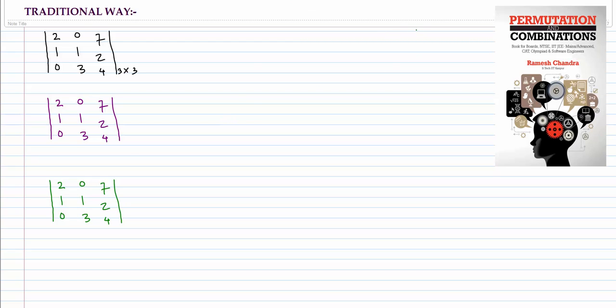In the same way, we have a virtual sign pattern as well. The virtual sign is: plus, minus, plus, minus, plus, minus, plus, minus, plus — alternating across the positions of the determinant.